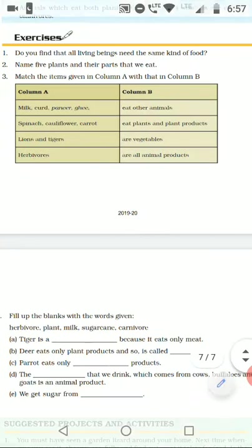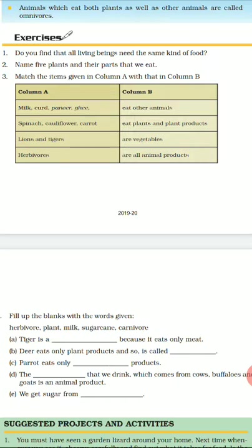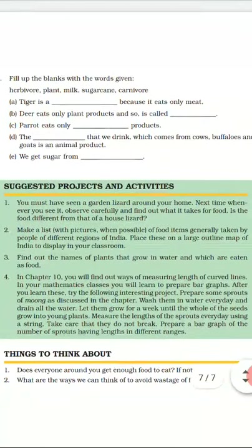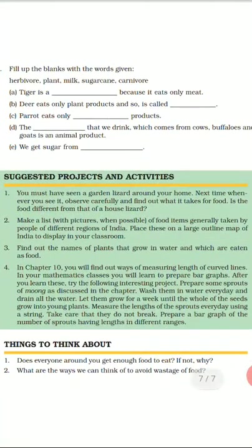Match the column: In column A, milk, curd, paneer, and ghee are all animal products. Spinach, cauliflower, and carrot are all vegetables. Lion and tiger eat other animals. Herbivores eat plants and plant products.